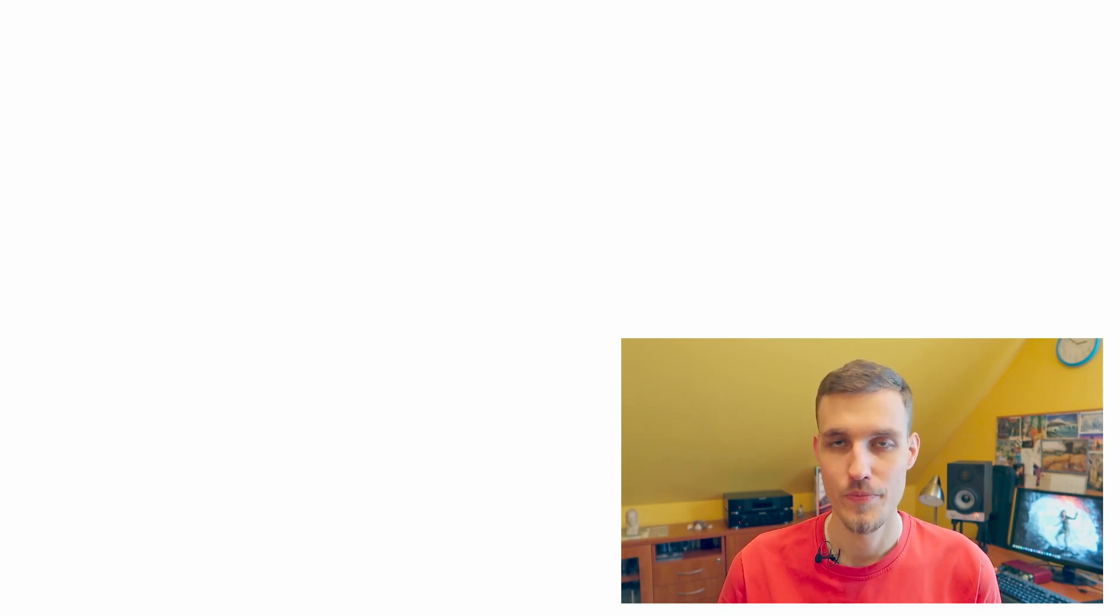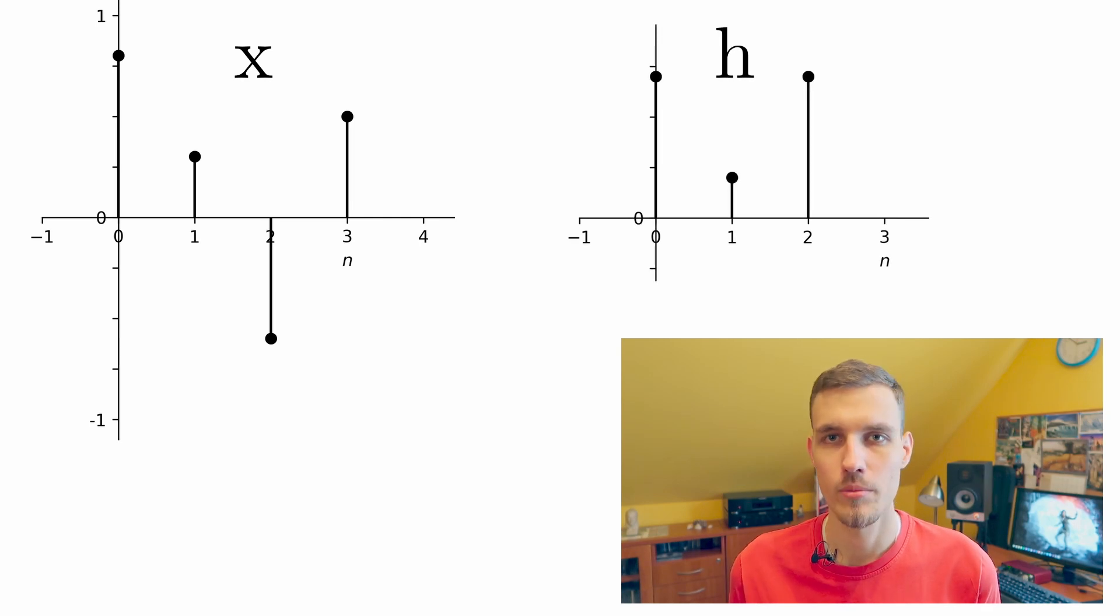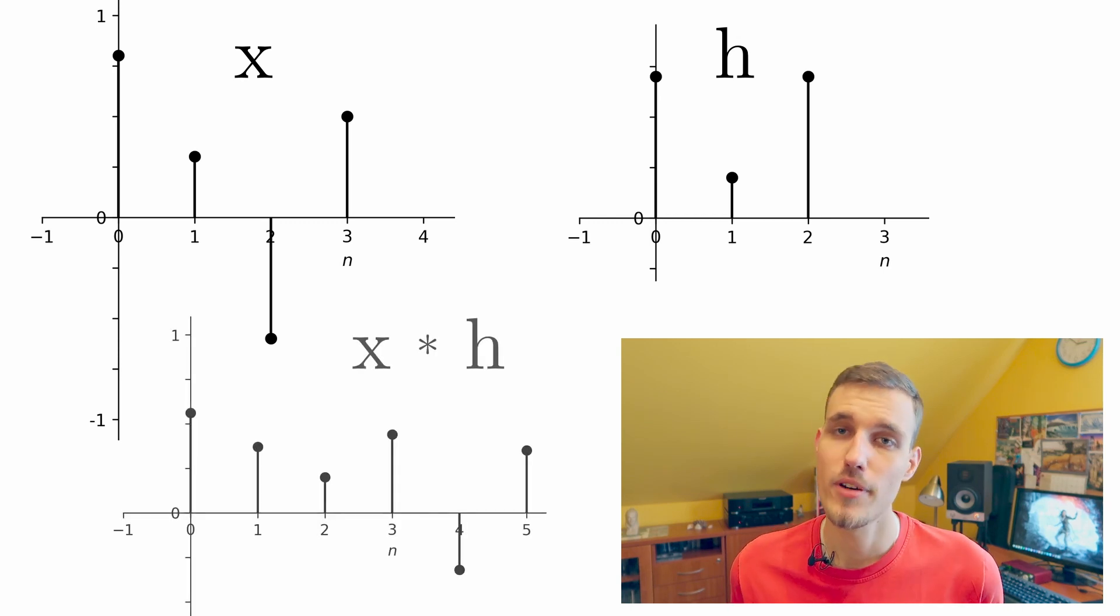It's best to understand it through an example. Let's consider our signal x having four samples and our impulse response h having just three samples. The result of the convolution operation between these two signals will look as the following.